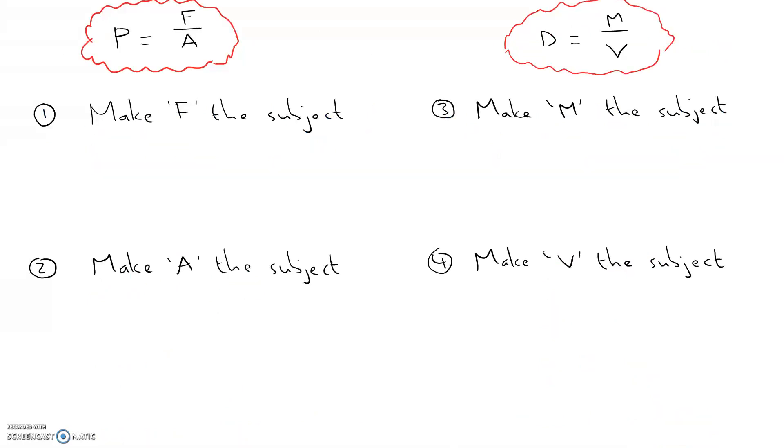Right, to give yourself some practice, let's have a look at two other formulae that you might see in physics or maths. The one on the left says P equals F over A. P equals F divided by A. It means pressure equals force divided by area. And the one on the right is D equals M over V. D equals M divided by V. And it means density equals mass divided by volume. So, have a go in the same way that I did with the speed equation. At making F the subject of the pressure equation. Then making A the subject of the pressure equation.